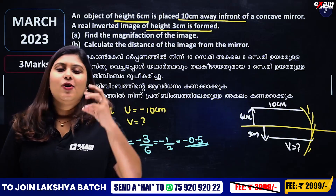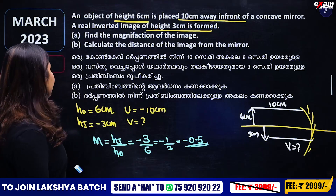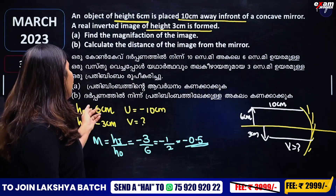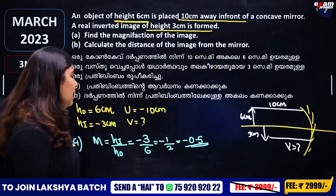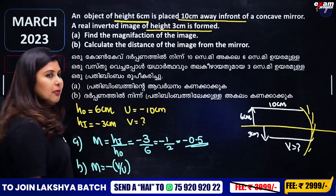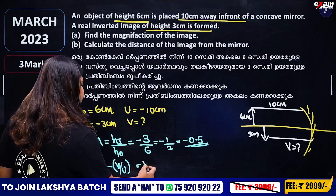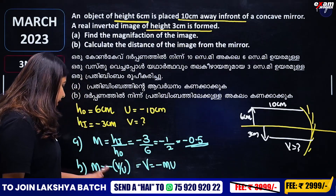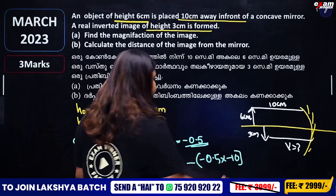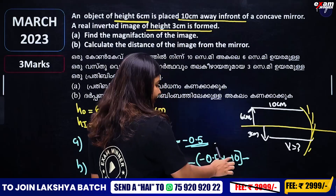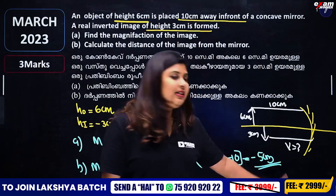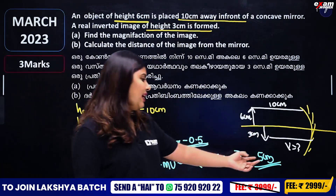If you want to find the magnification, you will need to calculate the distance of the image from the mirror. The image distance from the mirror is minus 10, so that is equal to minus minus plus. 0.5 into 10 is 5, that is equal to minus 5 centimeter.